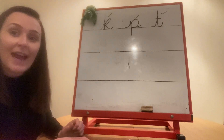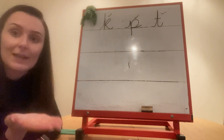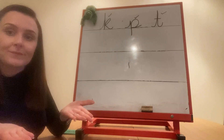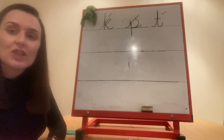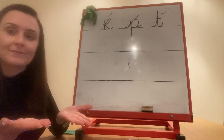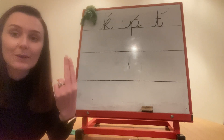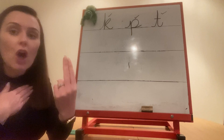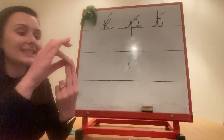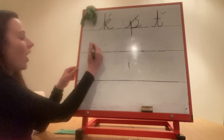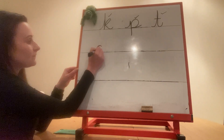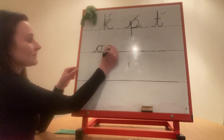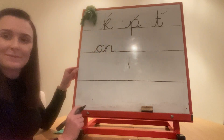Now it's time for some spelling. I'm going to spell a word first, then it will be your turn. I'm going to spell: on. Turn the light on. On. I only need two Fred Fingers because there are two sounds in this word. I'm going to say on and then pinch the sounds. On — o, n. On.